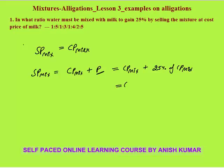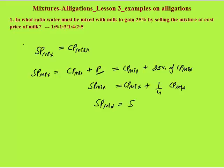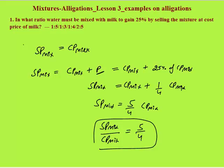So cost price of mixture plus 25% — which is 1 by 4 of cost price of mixture — equals selling price of mixture. So selling price of mixture equals 5 by 4 times cost price of mixture. The ratio of selling price of mixture to cost price of mixture comes to 5 is to 4.